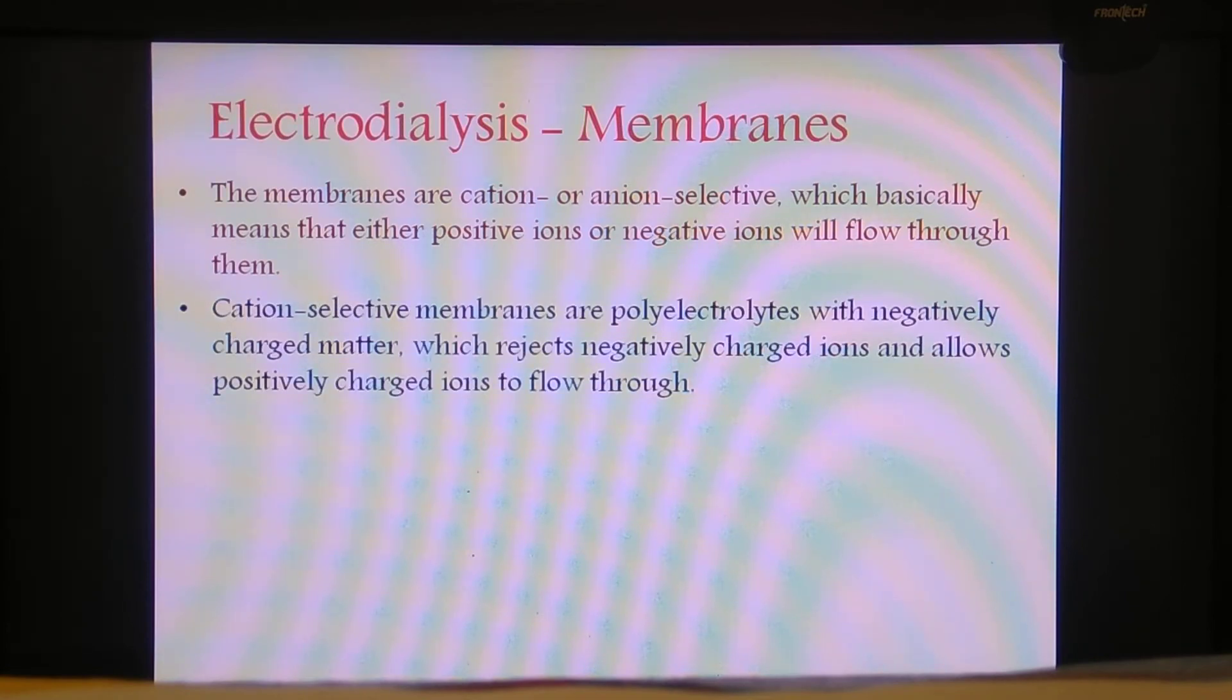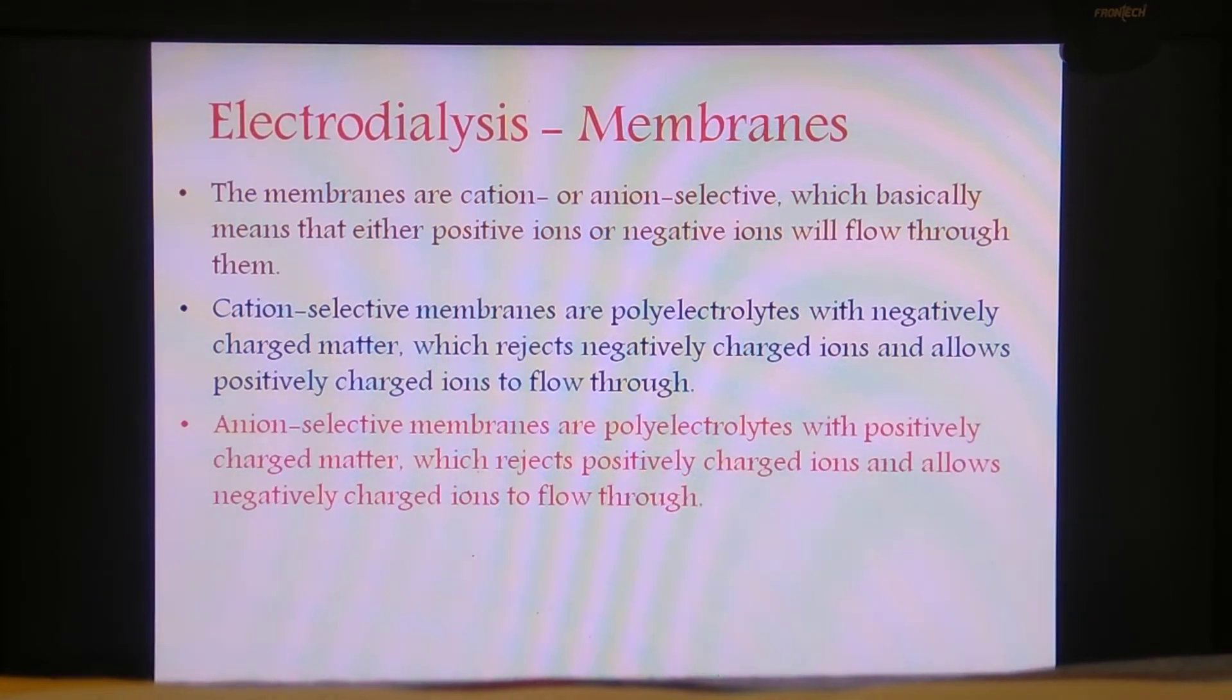A cation selective membrane is a polyelectrolyte with negatively charged matter. Because the cation selective membrane is negatively charged, it will repel or reject the negative ions and allow only the positive ions to flow through it. Similar is the case observed in an anion selective membrane where it is a polyelectrolyte with positively charged matter.